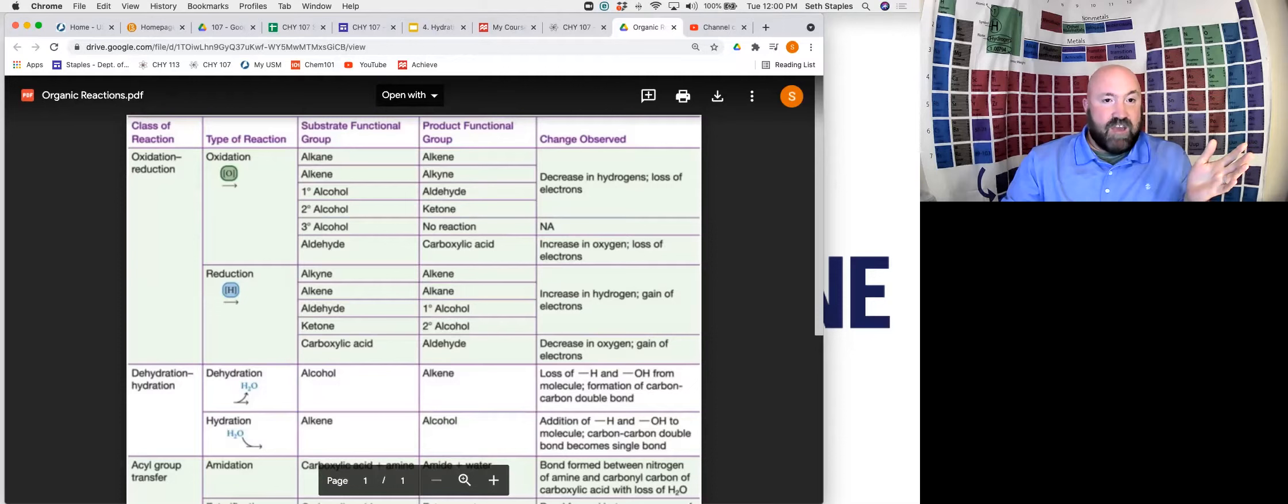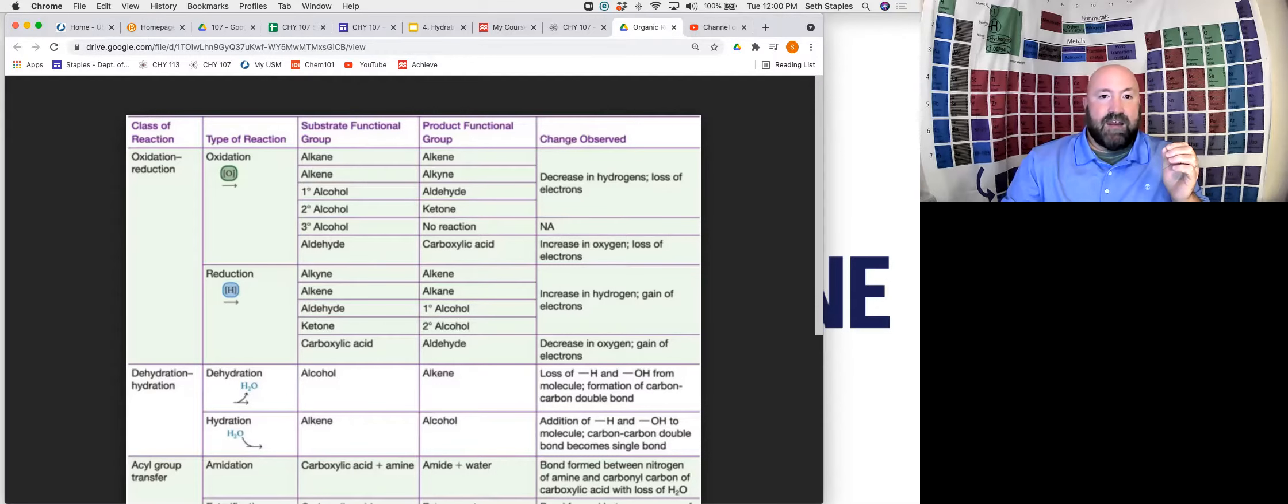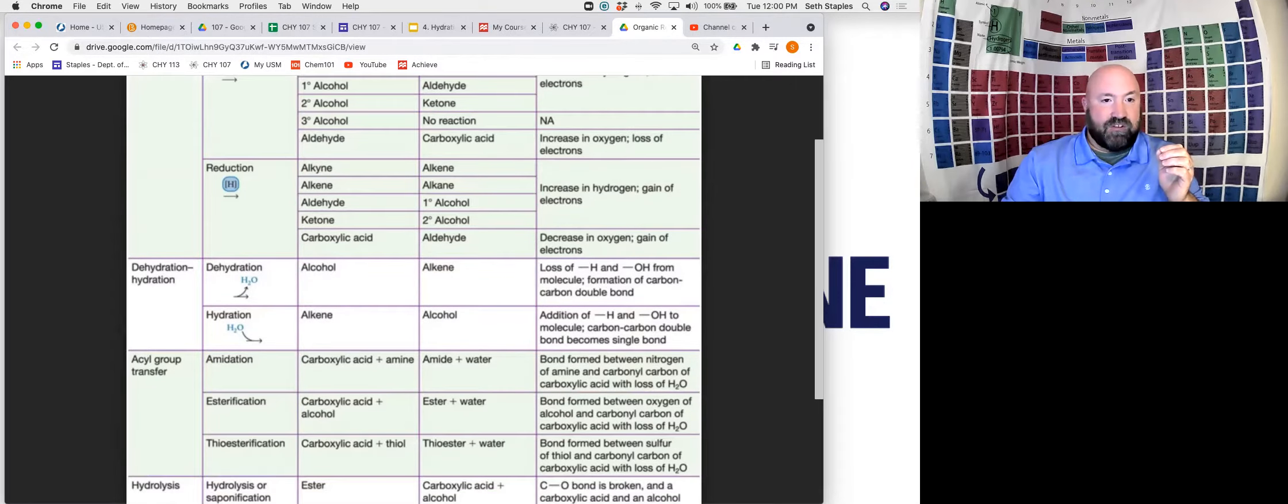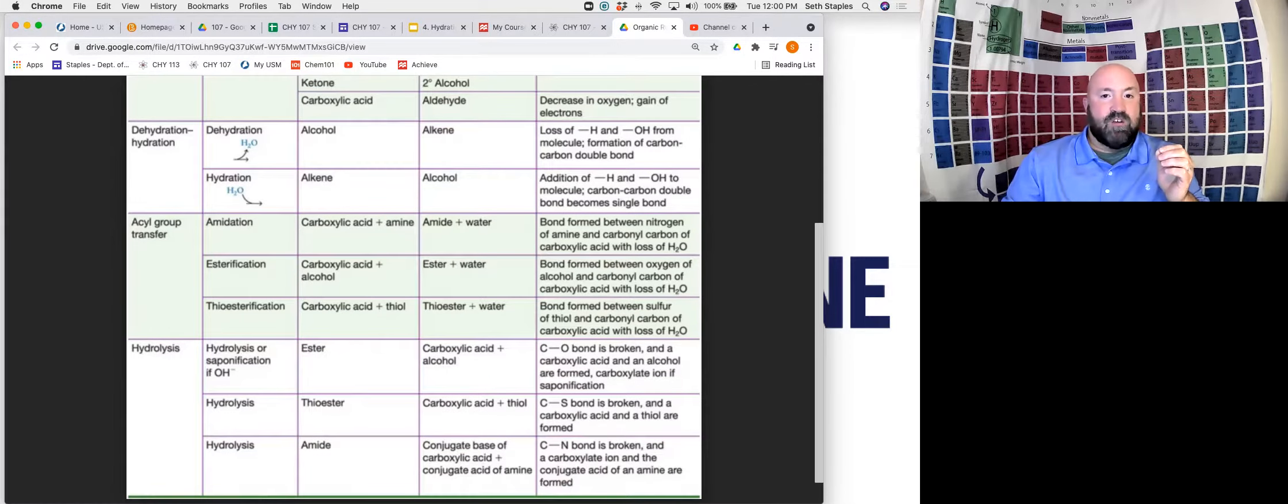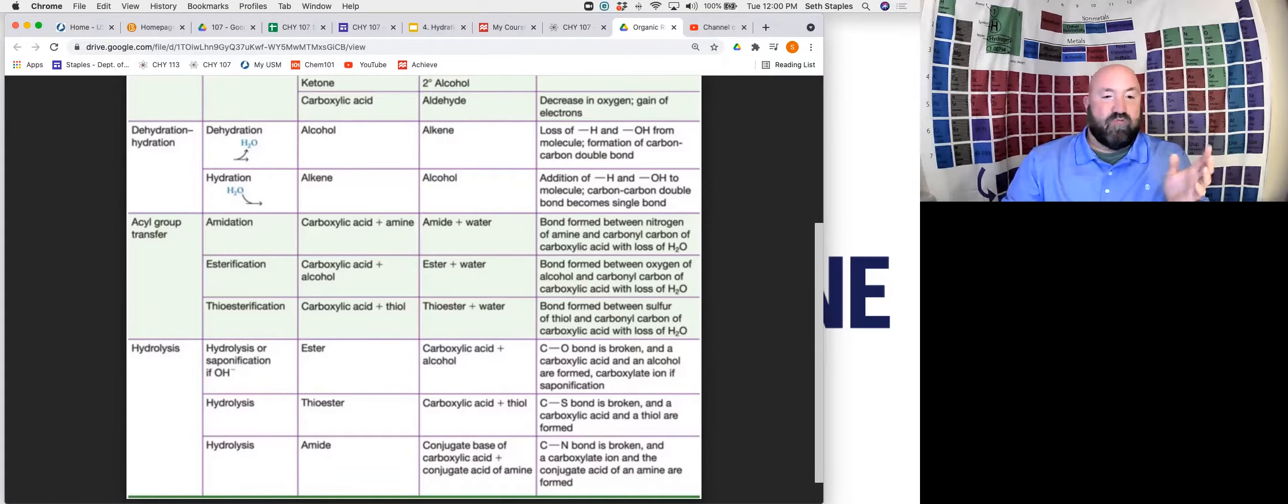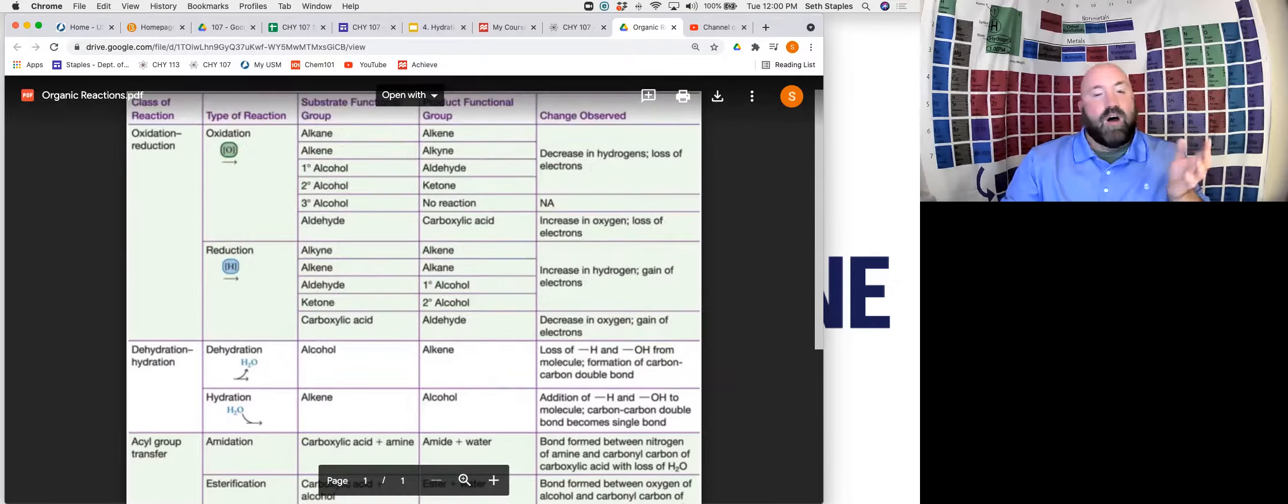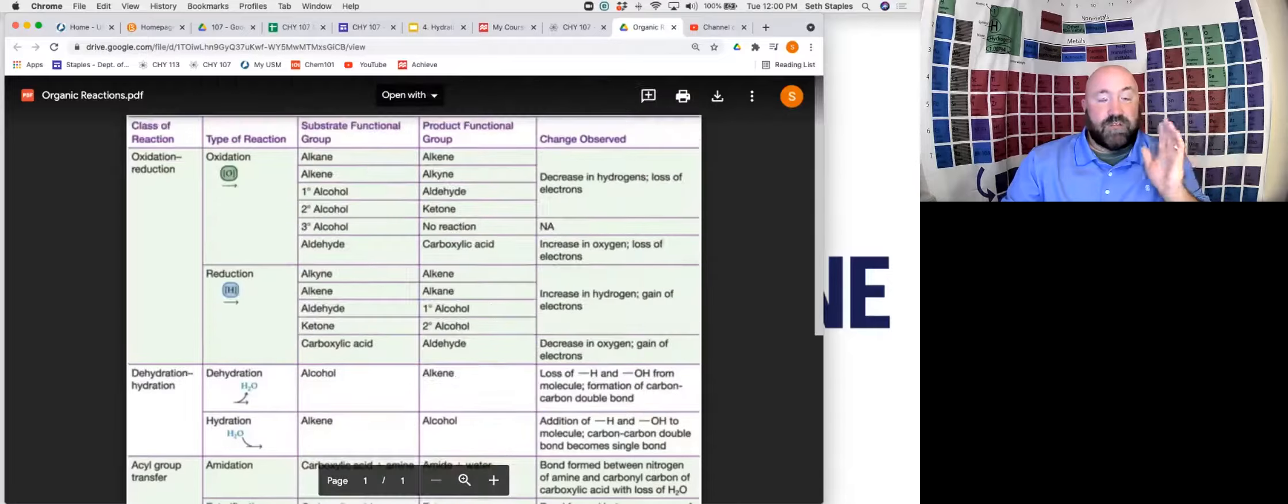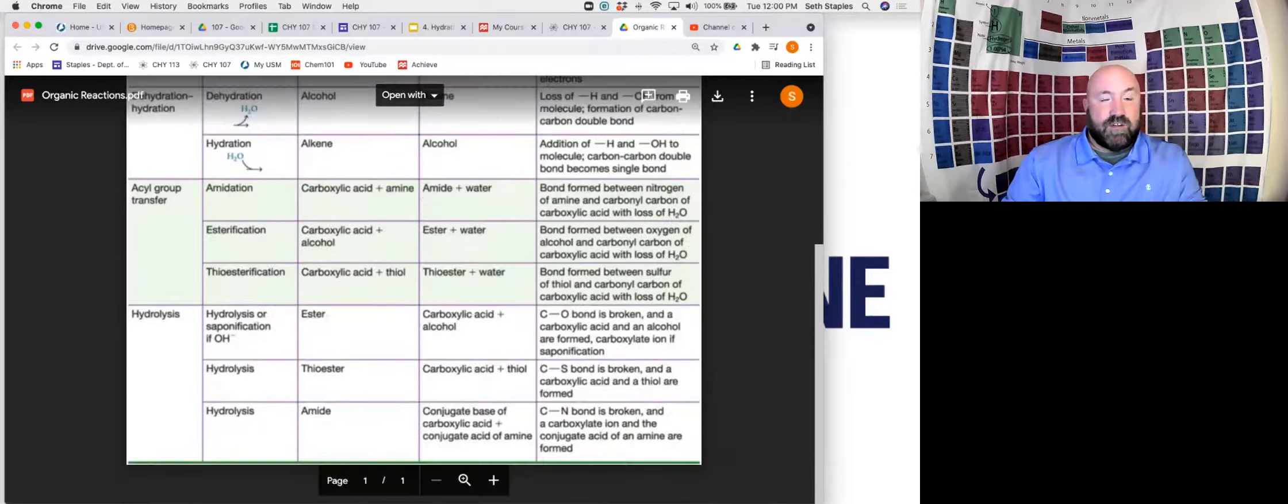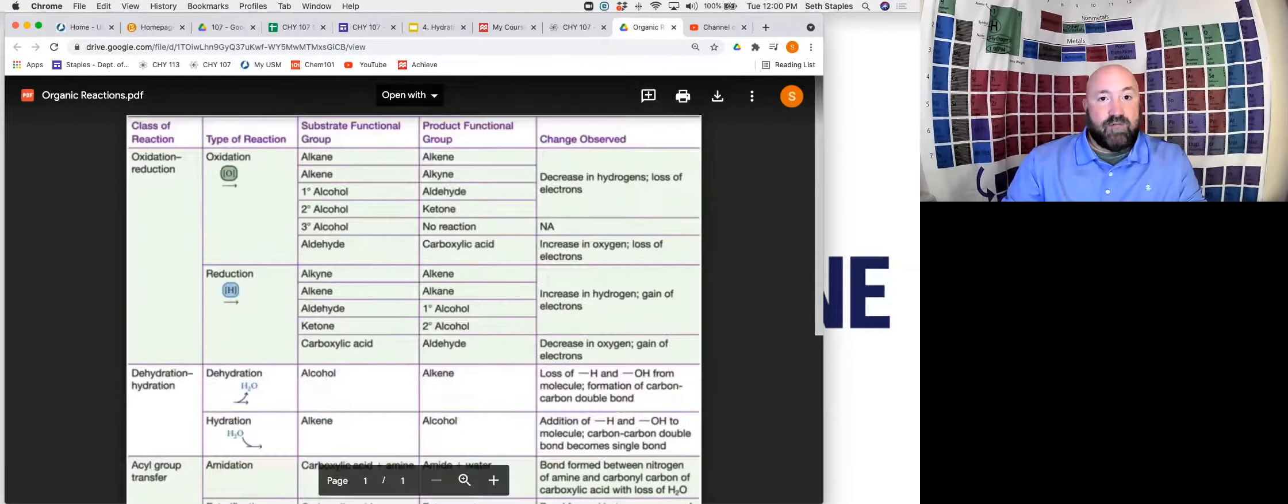Oxidation reduction reactions. So here we have some oxidations. For instance, we talked about how we can take a primary alcohol, go to an aldehyde. Secondary alcohol to a ketone and aldehyde to a carboxylic acid. Reduction reactions that we talked about. We just looked at dehydration reactions and hydration reactions. Transfer group reactions, hydrolysis reactions. All the different types of reactions that we've talked about in these last four videos are summarized on this handout here, which should come in handy for you.